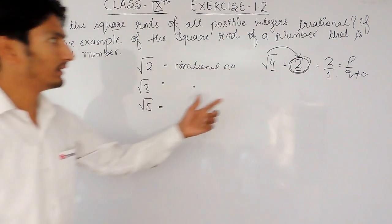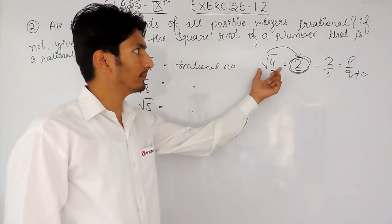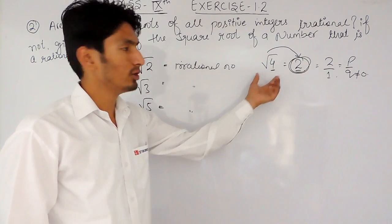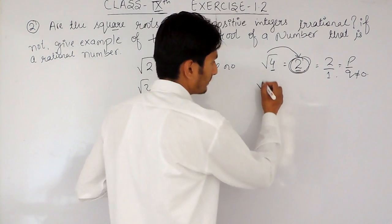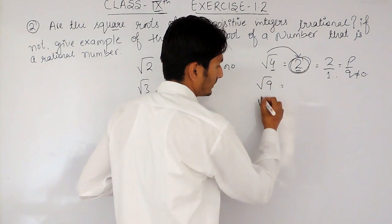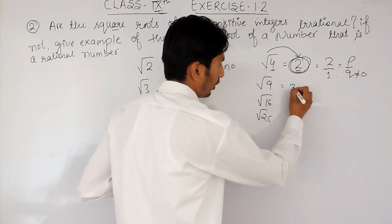Some of them, the numbers which are perfect square numbers, are rational numbers. So by this we can solve this particular question. If you want to give more examples, you can consider root 9 or 16 or 25.